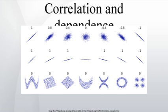In the third case (bottom left), the linear relationship is perfect except for one outlier which exerts enough influence to lower the correlation coefficient from 1 to 0.816. Finally, the fourth example (bottom right) shows another case when one outlier is enough to produce a high correlation coefficient, even though the relationship between the two variables is not linear. These examples indicate that the correlation coefficient, as a summary statistic, cannot replace visual examination of the data. Note that the examples are sometimes said to demonstrate that the Pearson correlation assumes that the data follow a normal distribution, but this is not correct.